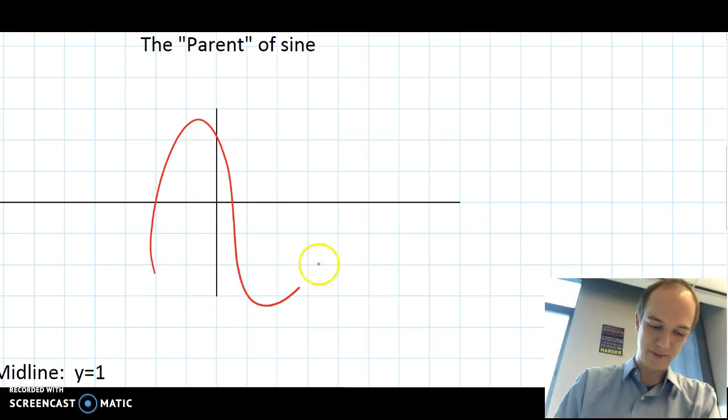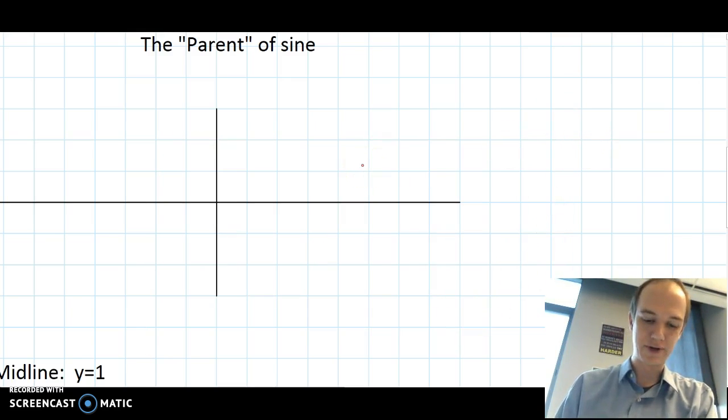So, sine looks like a wave, but it's not just a messy wave. It's a very neat wave, and it's very regular and very predictable. It starts at zero, and it always goes for the same points in the same order. It goes up, then it returns to the middle, then it goes down, and then it returns to the middle.